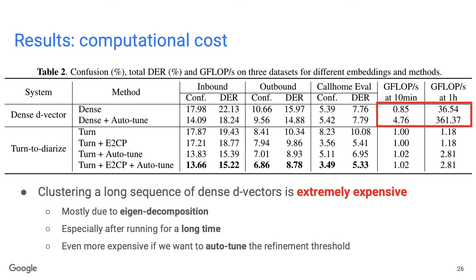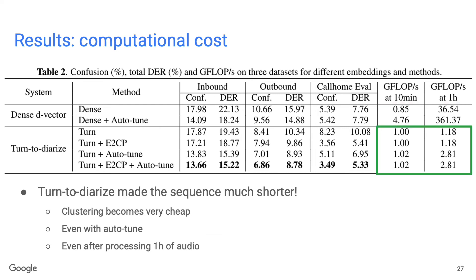Looking at floating-point operations needed to process 1 second of audio: for the dense d-vector baseline, this number becomes very large after processing 1 hour of audio, especially with auto-tune, because the sequence of embeddings is very long and eigen decomposition on a very large matrix is extremely expensive. This means dense d-vector is not feasible for long-form audio such as meetings. But for Turn-to-Diarize, the computational cost remains much cheaper for long audio because speaker turns are sparse, keeping the embedding sequence very short. Even with auto-tune after 1 hour of audio, the cost remains very low.